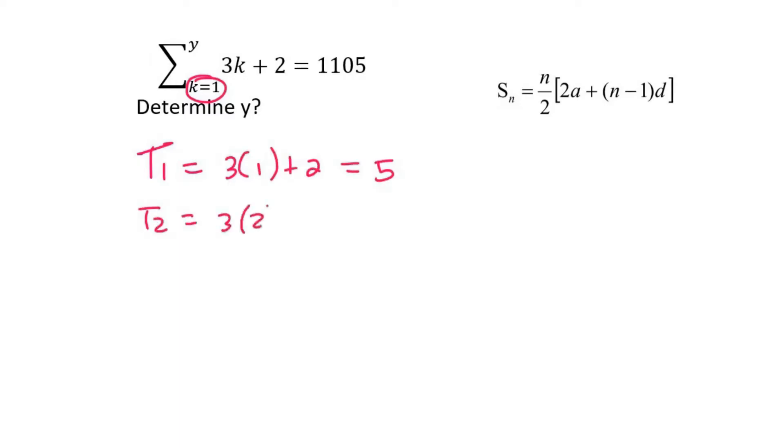Term 2 would be 3 times 2 plus 2, which is 8. And then term 3 would be, you obviously plug in a 3 over there now, and that'll be 11.